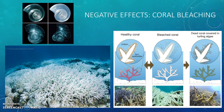The increasing acidity of our oceans has been creating harmful consequences for marine organisms. Marine life has been shown to have decreasing metabolic rates and immune responses, but one of the biggest effects of increasing acidity has become coral bleaching.